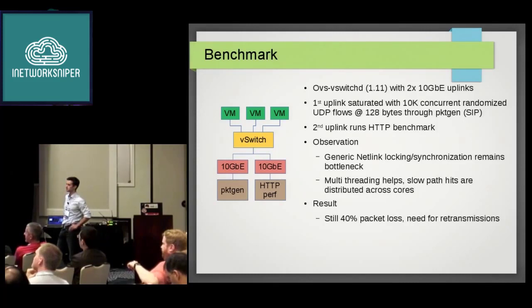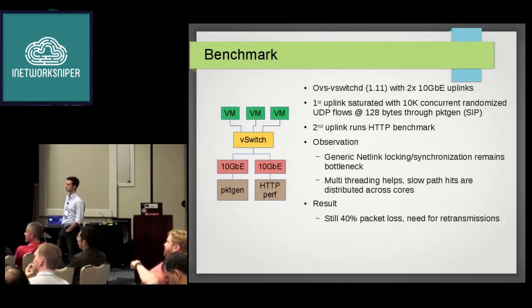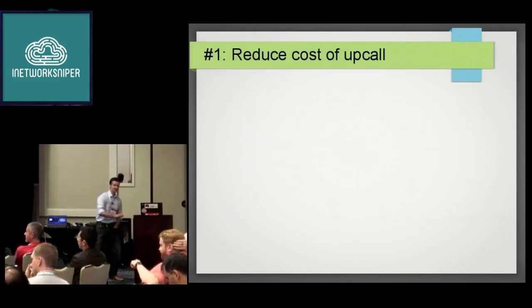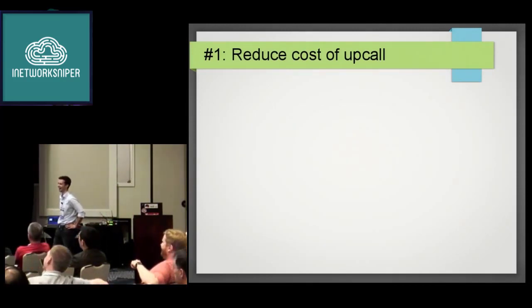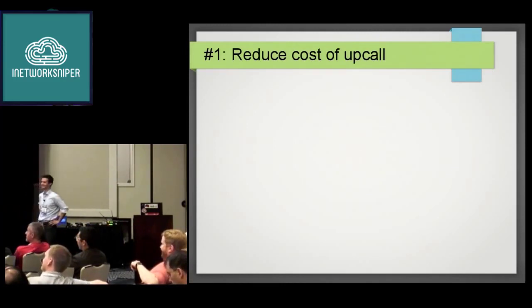There are two ways to address it. One is to make the slow-path user space faster using multi-threading. The other — and more appealing — option is to just make fewer upcalls. If we can solve this at a conceptual level and don't even need the locking, then we don't even have to optimize it. If we can make the problem disappear, we don't have to solve it.